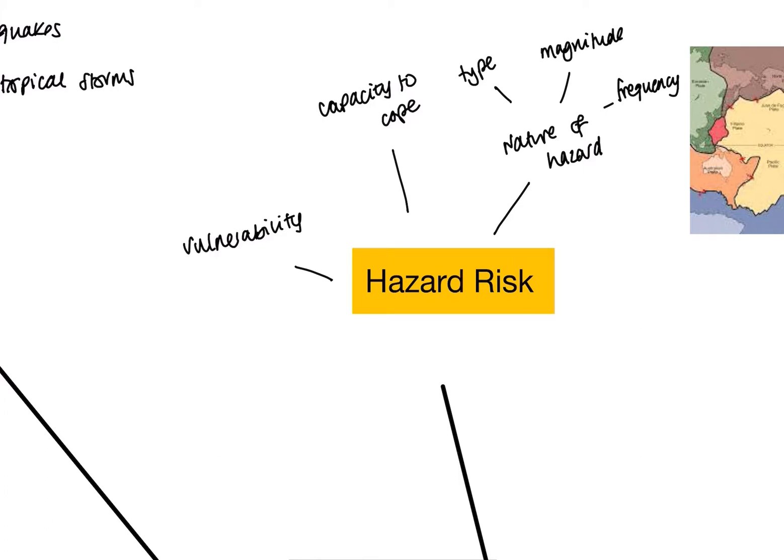So if we know that we have two different types of hazard, we have three main factors: our vulnerability, our capacity to cope, and our nature of a hazard that can influence how great this risk is. Then we can start to move on and think about exactly how some of these hazards are created.